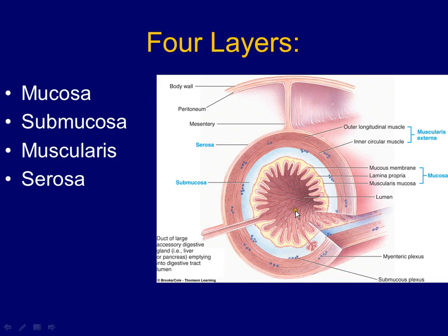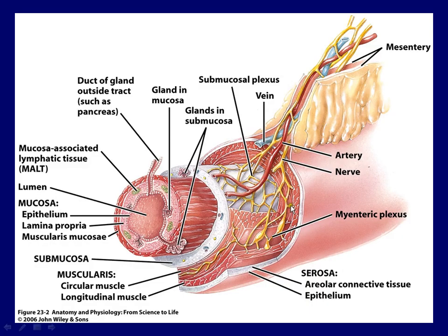The next layer is the submucosa — just below the mucosa. It's full of blood vessels and lymphatics, like the deeper layers of your skin. The mucosa is avascular — no blood vessels — just like the superficial layer of skin. The submucosa is packed with blood vessels and nerves to help control and regulate it.